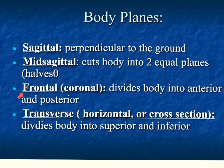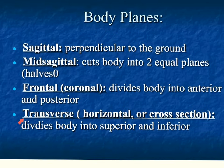A frontal plane is also known as a coronal plane and this divides the body into an anterior and a posterior — a front and a back — so it divides the body into the front and back regions. A transverse plane is also known as a horizontal or cross section, and this is a plane that divides the body into a superior and an inferior, or an upper and a lower region.